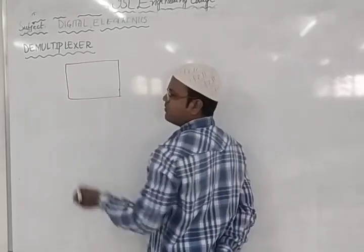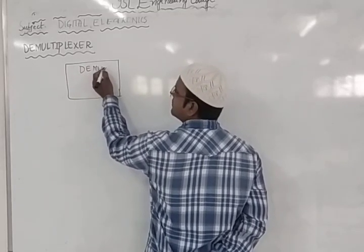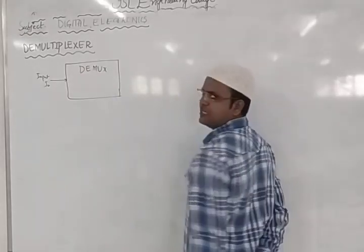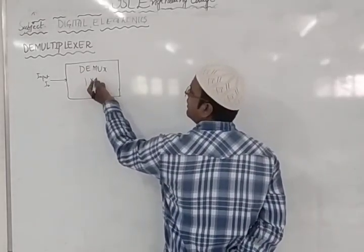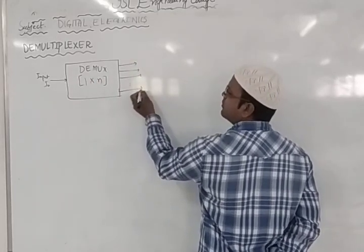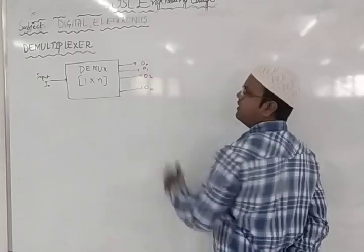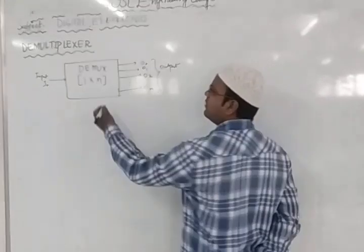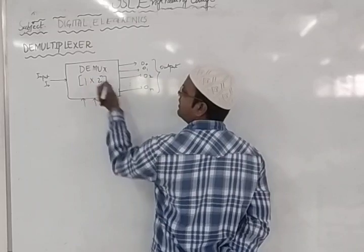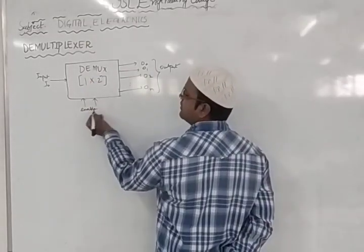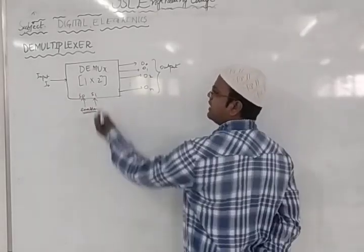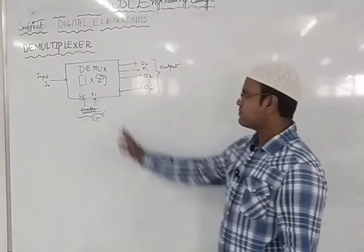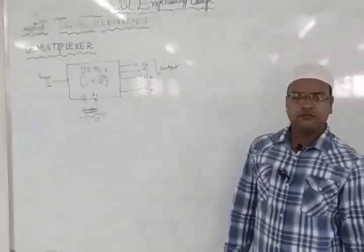In a demultiplexer — also called DEMUX — there is a single input (I0). The output combination is 1-to-N, where N indicates the number of outputs starting from O0, O1, O2, and so on till ON. To get these outputs, the number of select inputs depends on N using the formula 2-power-N. Enable or select inputs decide how many select lines are required based on N.